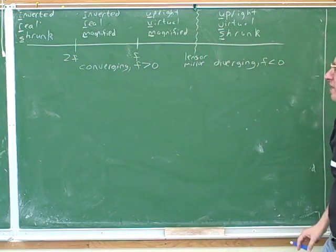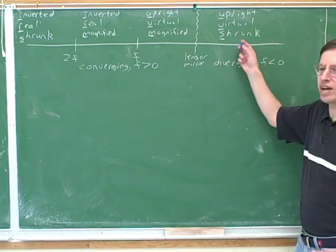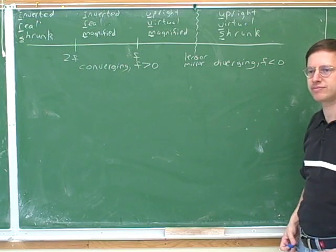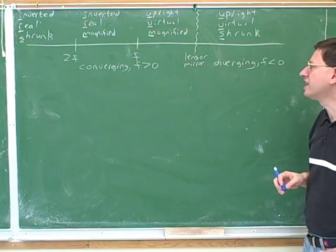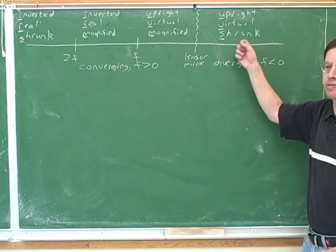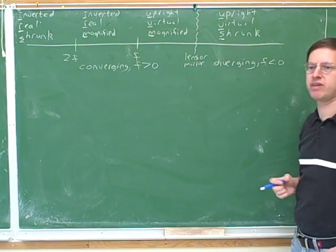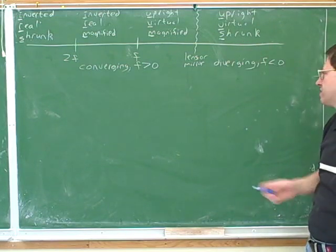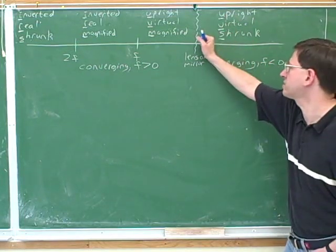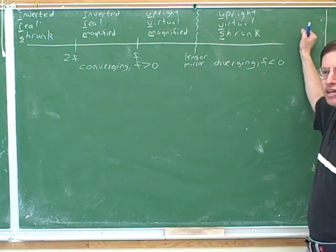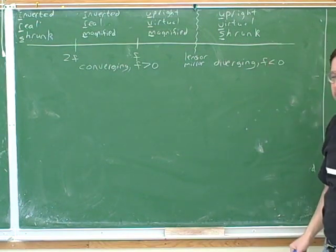Notice that on this side of the diagram, I didn't bother putting in the distances for f and 2f. The reason is it doesn't matter where you put the object for a diverging device. Diverging devices always give you upright, virtual, and shrunken images, whether it's close to the lens or mirror or far away. So there's only one case for a diverging device.